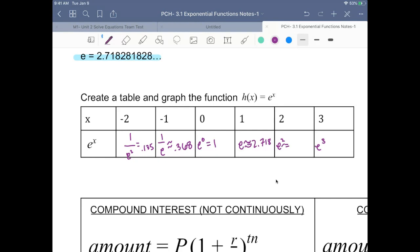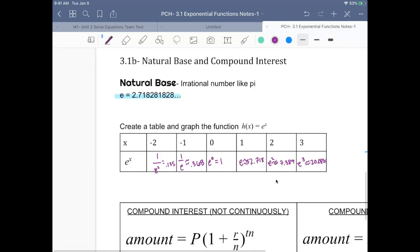E squared would be 7.389, and e cubed is about 20.086. So let's go ahead and graph those.